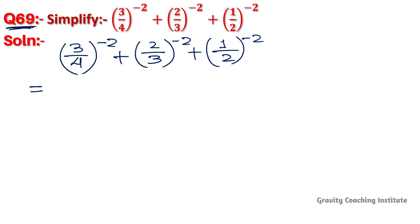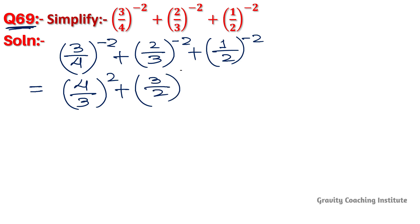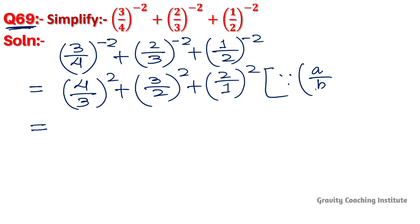Question number 69 solution. We apply the formula: A upon B to the power minus M equals B upon A to the power M. Using this law, we convert the negative exponents by flipping the fractions.